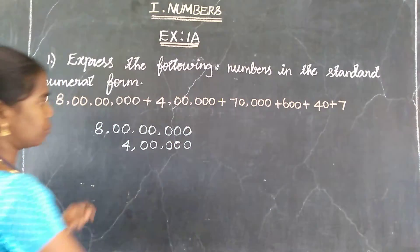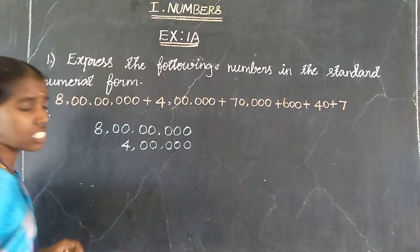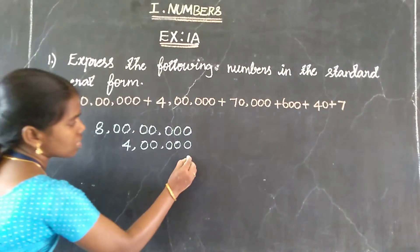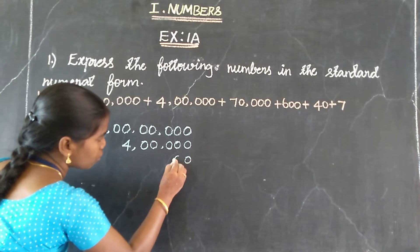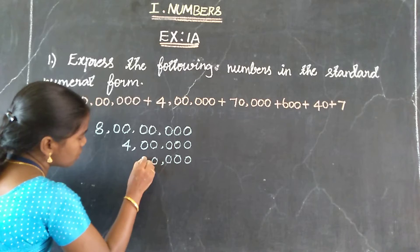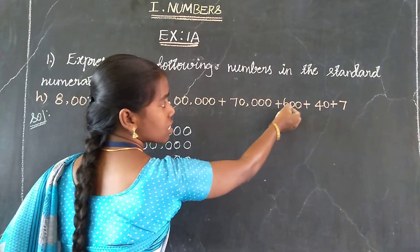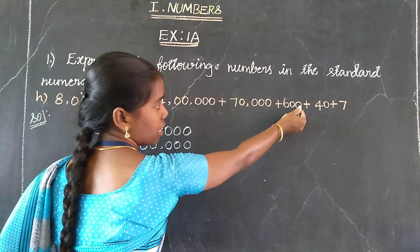Next one. Then ones, tens, hundreds, thousands, 70 thousand. 70 thousand in the final form: 0, 0, 0, then 0, 7. 70 thousand. Next one, 600. 600. So ones, tens, hundreds. 600: 0, 0, 6.